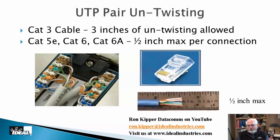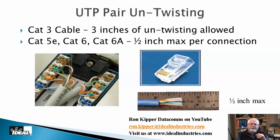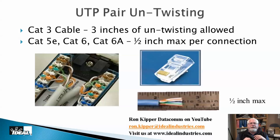When terminating cables — putting a connector on the end at a patch panel, jack, or modular plug — the standard says to leave no more than a half inch of untwisted conductor at the connection. You can bend the cable in many cases, but don't untwist it. You can never re-twist it the way the machine did, and technically it should be twisted at a very specific rate throughout the entire cable length. Half inch is the maximum untwisted length allowed per connection.